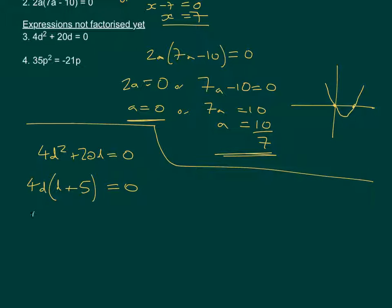So either 4d equals 0, because again, remember we want either this number to be 0 or this number to be 0, because any number times 0 equals 0. So 4d equals 0, or (d plus 5) equals 0. So 4 times 0 is 0, so d must be 0 for that side, or d equals minus 5.